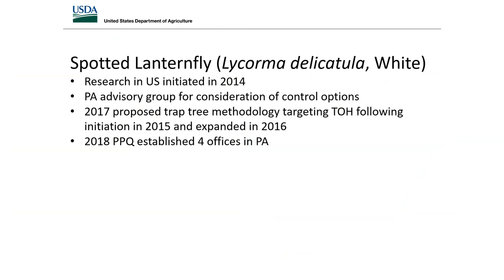Shortly after confirmation in Pennsylvania, an advisory group was established in 2014 to evaluate control options, largely based on South Korean literature. Many products showed efficacy against both nymphs and adults — the main challenge is getting the product to them. Two products stood out for high efficacy and good residuals: dinotefuran and bifenthrin as a contact insecticide. In 2015, the trap tree methodology was trialed and expanded in 2016, specifically targeting tree of heaven.